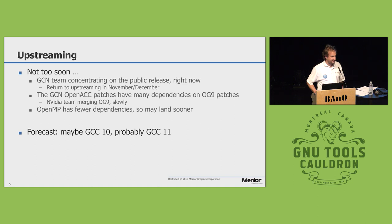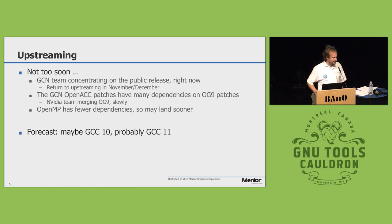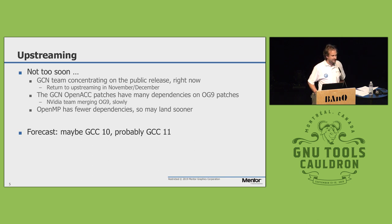As for when this will be available upstream: the backend is already upstream, but that's not something a user can make much use of yet. The OpenACC patches need polishing before they can get into GCC trunk. OpenMP has fewer dependencies, so that may actually go in for GCC 10. The OpenACC support might be ready for GCC 10 or possibly GCC 11.